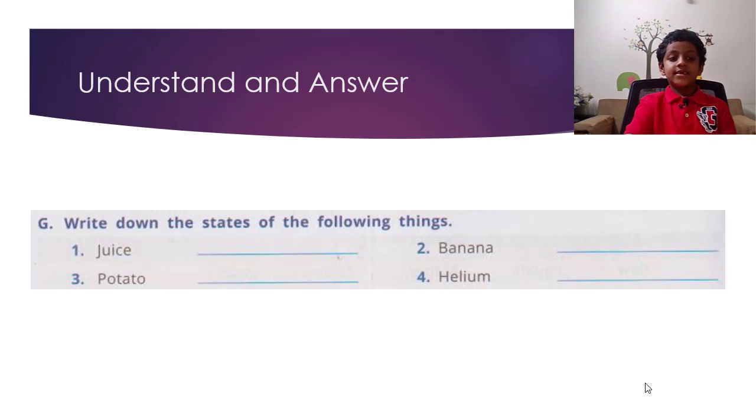G. Write down the states of the following things: Juice - liquid. Banana - solid. Potato - solid. Helium - gas.